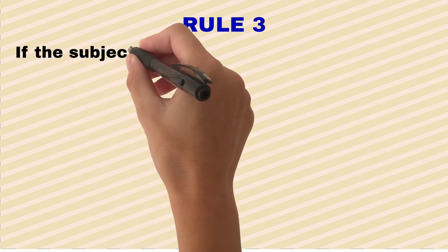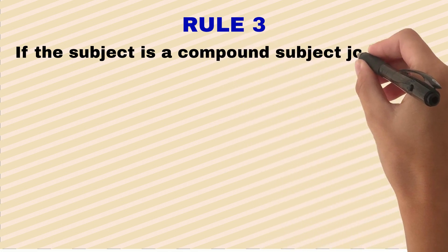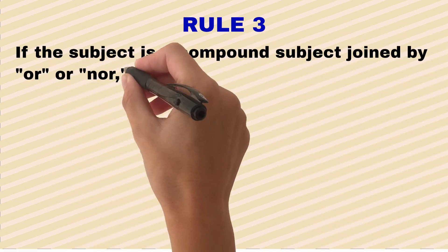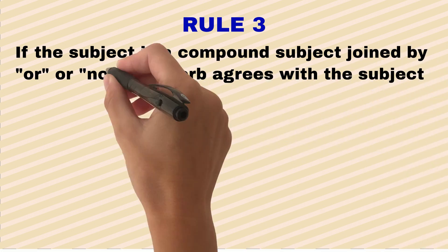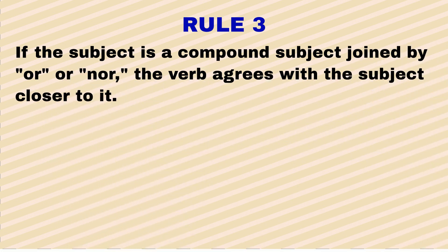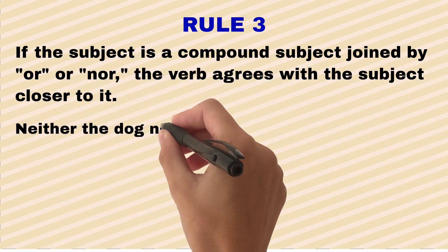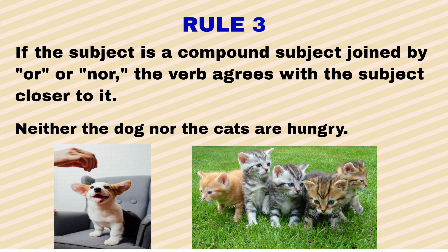If the subject is a compound subject joined by 'or' or 'nor,' the verb agrees with the subject closer to it. For example, 'Neither the dog nor the cats are hungry.' In this example, 'dog' is singular and 'cats' is plural. Because the subject 'cats' is closer to the verb, we use the plural verb 'are.'